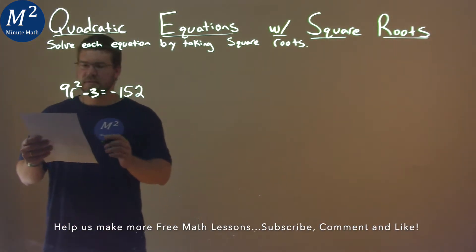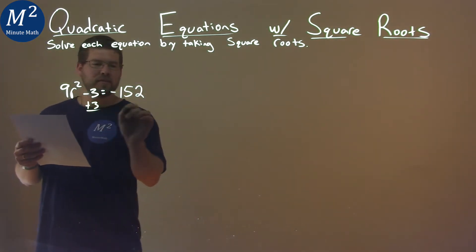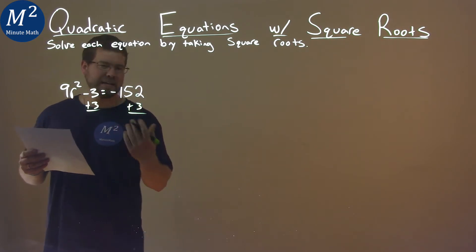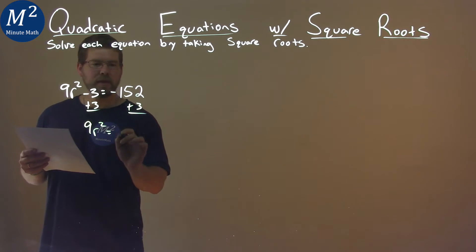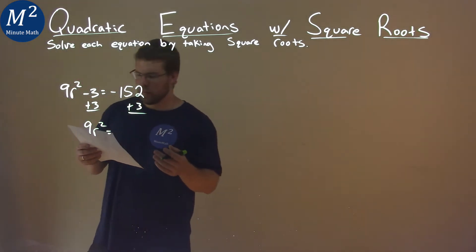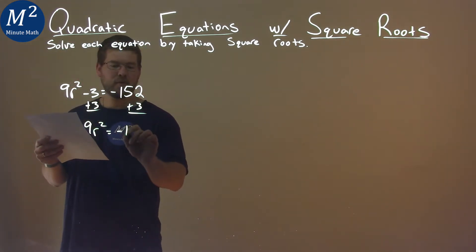First thing I want to do is I want to add 3 to both sides. I want to get r by itself here. Adding 3 to both sides gives me 9r squared equals negative 152 plus 3 is negative 149.